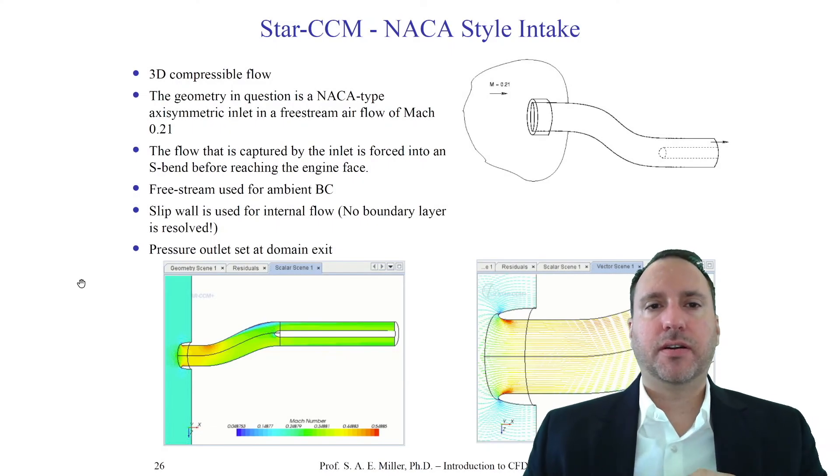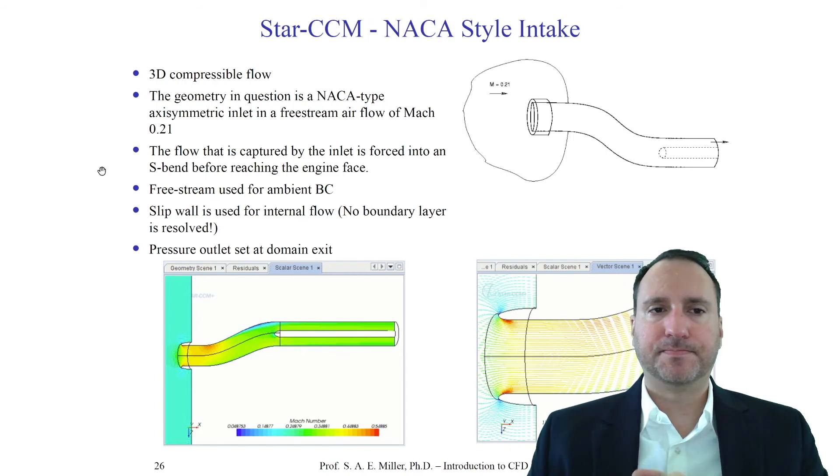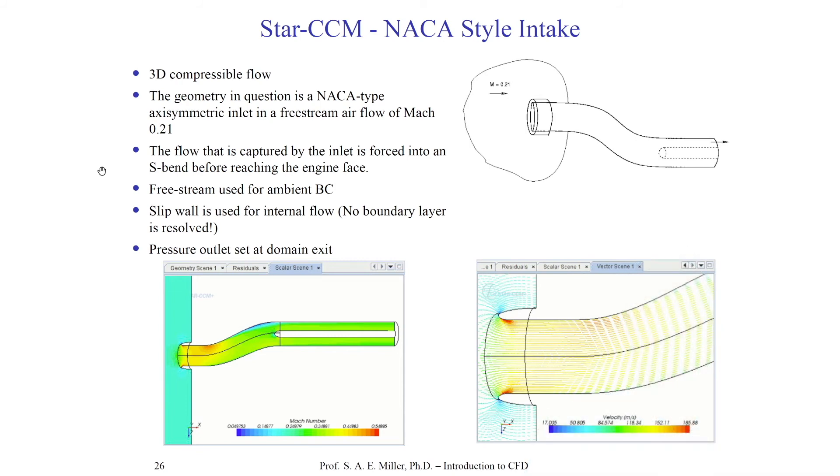Let's look at a particular Star CCM case for the NACA style intake. This is originally for intakes for engines using an S-bend. Here in the upper right, you see there's a Mach 0.21 flow going into this intake. So this is an exterior part of the aerodynamics and it goes in this tube and wraps around and goes into the engine. There's some little center body here of the engine. They'll model this as a three dimensional compressible flow. They could have used a single plane of symmetry, but that's okay. The geometry in question corresponds to this air intake and the flow is captured by this so-called inlet and forced into an S-bend which reaches the engine face. How do we model this?